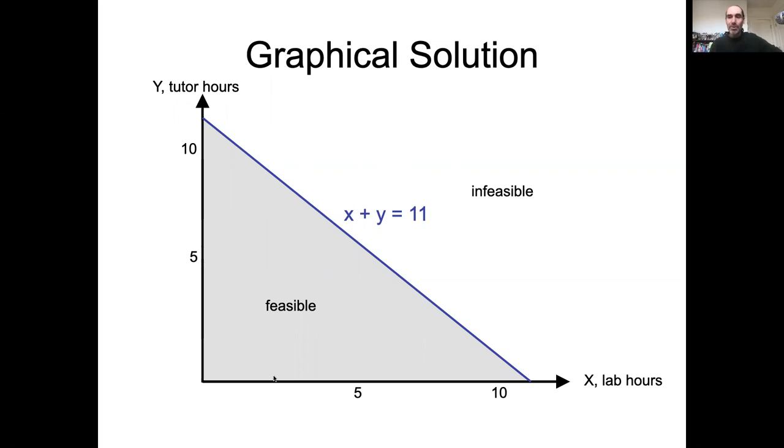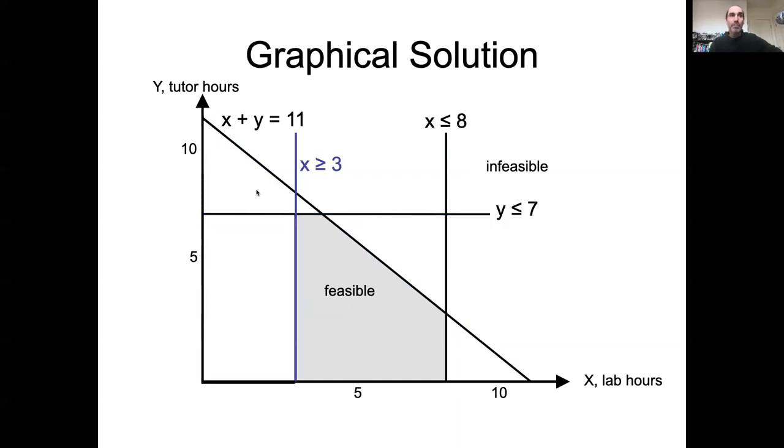But remember, that wasn't our only constraint. So in this problem, we also had the constraint that we weren't going to spend more than eight hours in the language lab. We had another constraint that we weren't going to spend more than seven hours getting math tutoring. We also had minimum hours we need to spend to pass our French exam, minimum number of hours we need to spend to pass our calc exam. And then we had another line that describes our budget constraint.